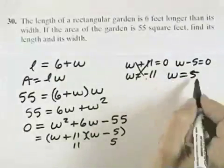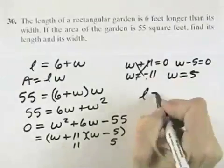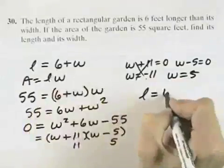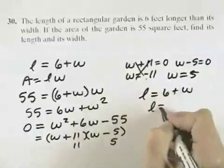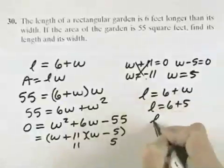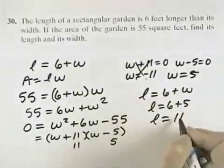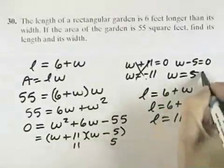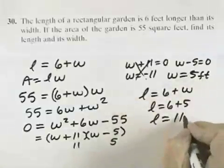So I know that must be the choice, that the width equals 5. And since the length equals 6 plus W, then that means the length will equal 6 plus 5, so the length equals 11. So what I have is the width is 5 feet and the length is 11 feet.